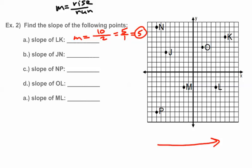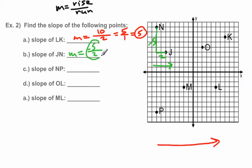Find the slope of JN: M equals rise over run. Looking from J to N — we always go left to right, so N comes first and J is to the right below. Going from N down to J, I go down 5, so the rise is negative 5. The run is over 2. So I have negative 5 over 2. I can't simplify that, so the slope of NJ is negative 5 over 2 — it's going down from left to right, so that's a negative slope.